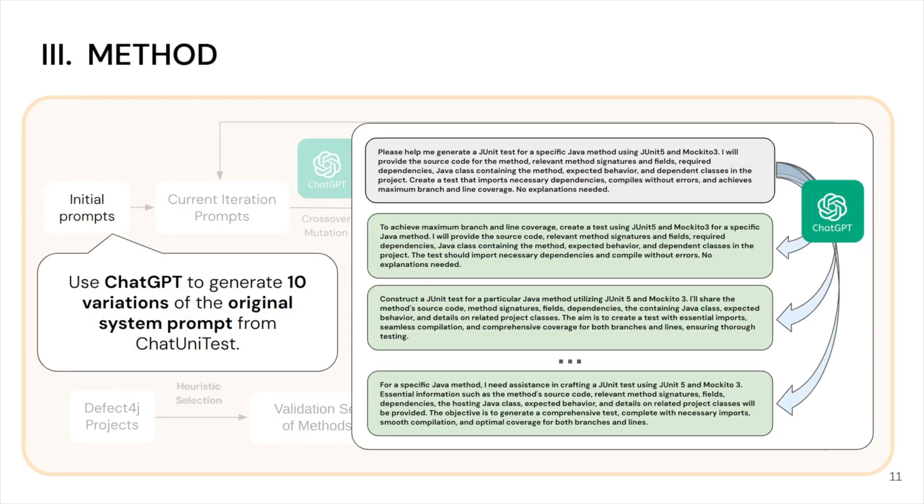Firstly, we need a pool of initial prompts to evolve on. Inspired by prompt generation strategy in GPS paper, where they use a pre-trained language model to generate new prompts, we use ChatGPT to generate 10 variations of original system prompts from ChatUnitTest as our initial population. We ensure that these 10 variations share similar content while featuring distinct sentence structures and wording.